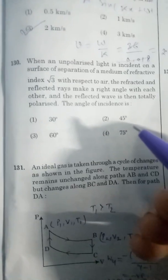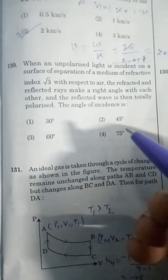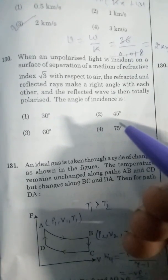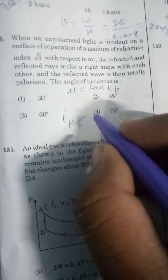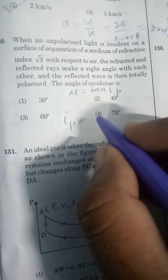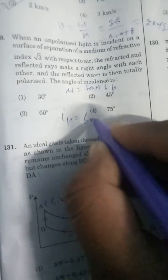In the second question, unpolarized light with refractive index mu - the reflected and refracted rays make a right angle to each other. So by Brewster's law, mu is equal to tan i_p, and i_p is tan inverse mu. Tan has the value root 3 at angle 60 degrees, so i_p is equal to 60 degrees. Option number 3.